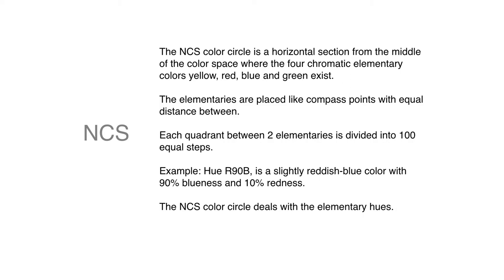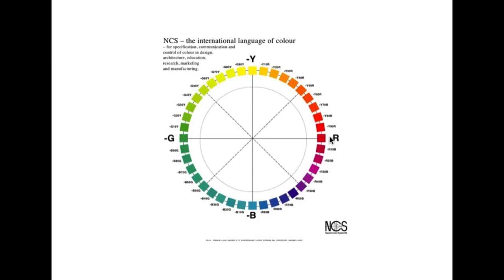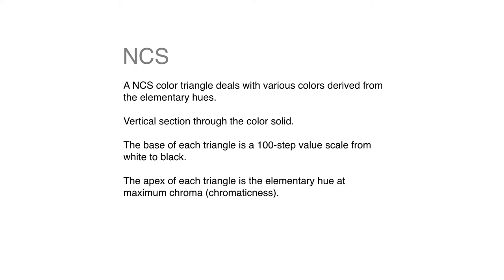So this describes a cool blue that has mostly blue and about 10% redness in its perceived makeup. Remember that this is not via color mixing. This is how we see the final color. So here are the four chromatic elementaries. And of course, white and black would exist at polar opposites in the center. You can see all the 10 different color families between the elementaries.